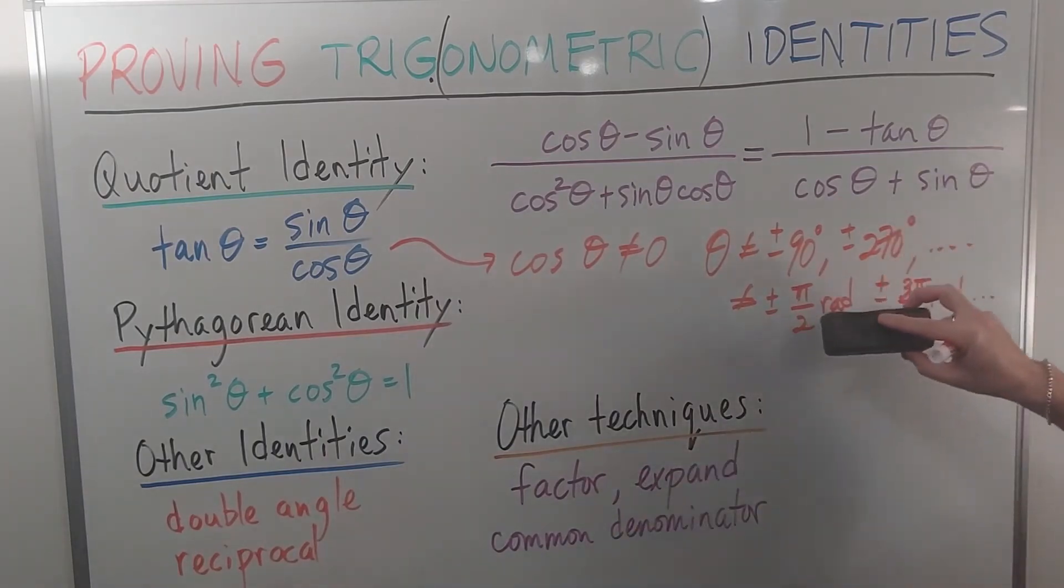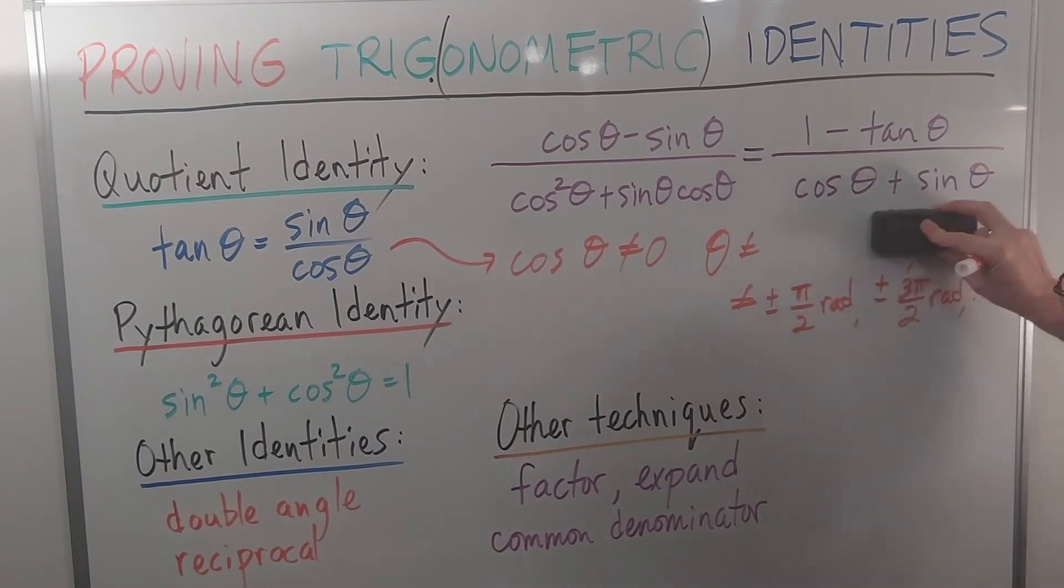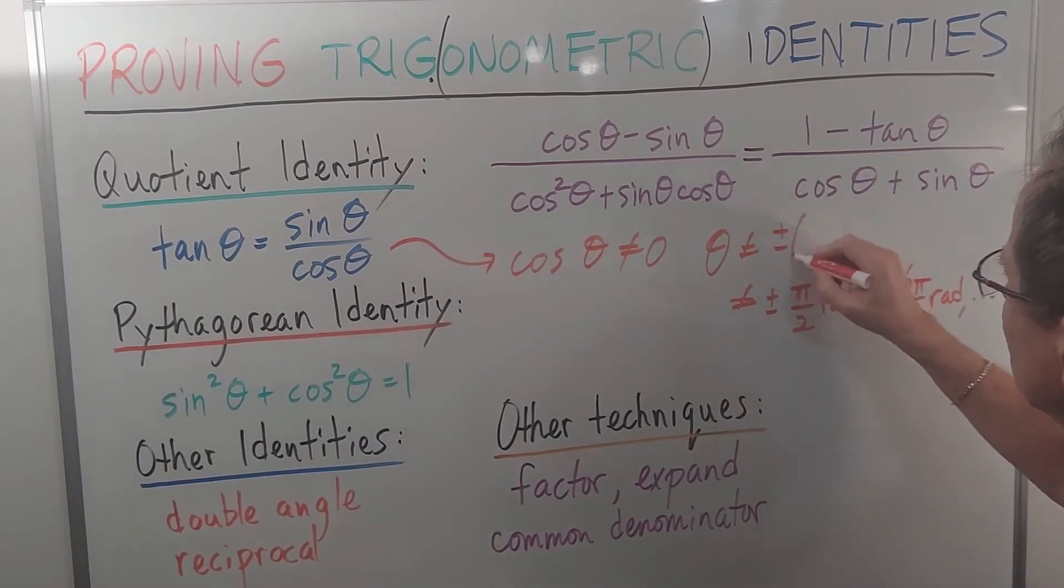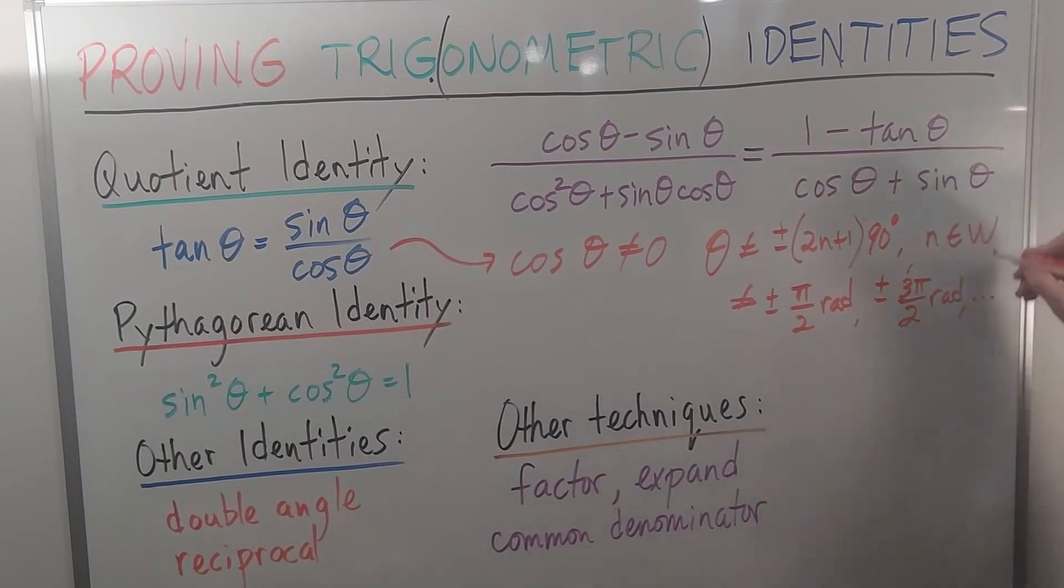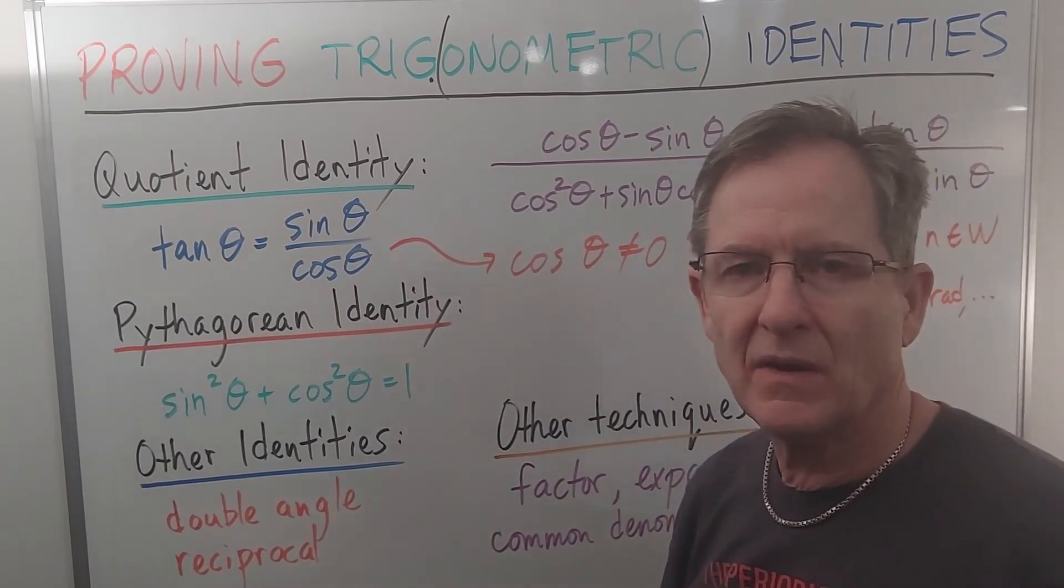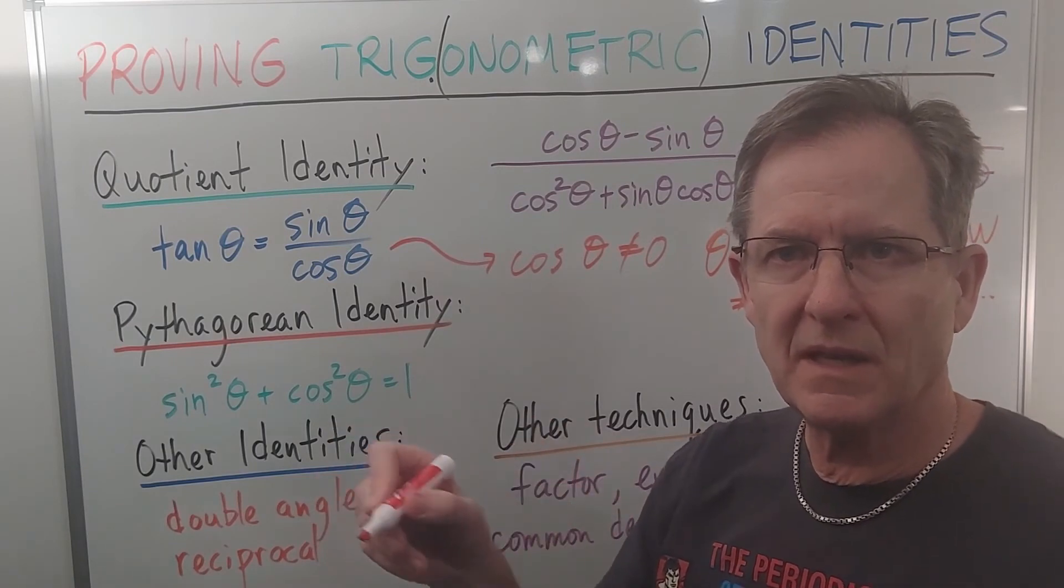Or, for short, I could say that θ can't be plus or minus (2n+1) times 90 degrees, where n belongs to the whole numbers. In the last video, I explained that the whole numbers were 0, 1, 2, 3, etc.